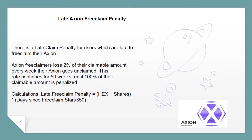Late Axion Free Claim Penalty: There is a late claim penalty for users who are late to free claim their Axion. Free claimers lose 2% of their claimable amount every week their Axion goes unclaimed. This rate continues for 50 weeks, until 100% of their claimable amount is penalized.